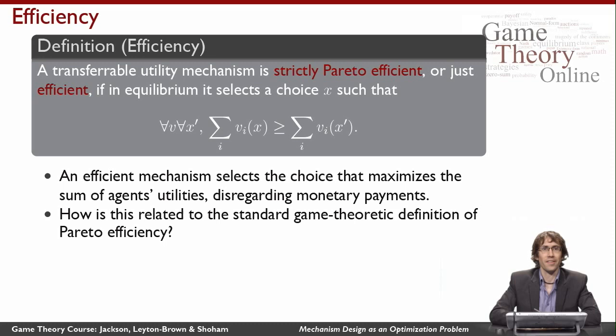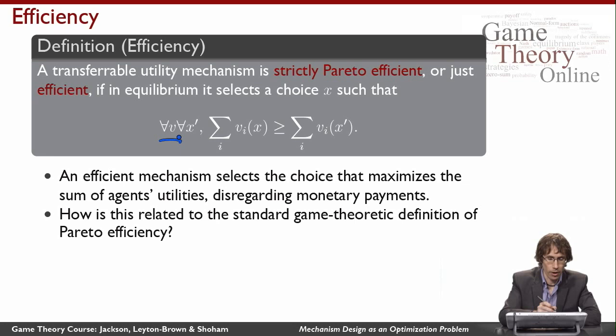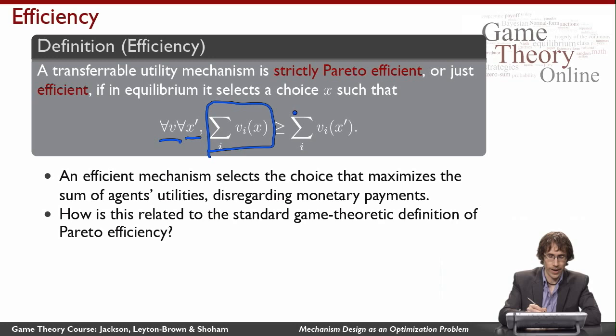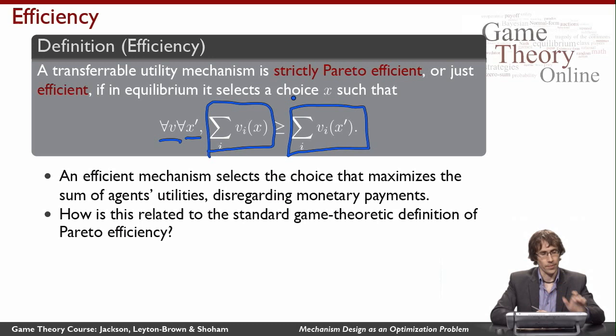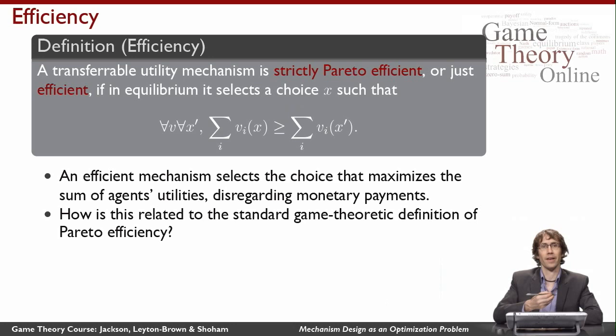A mechanism is strictly Pareto efficient, or just efficient, if in equilibrium it selects a choice X such that for all joint valuation vectors the agents might actually have, and for all other choices X prime, the sum of the agents' valuations for X is at least as big as the sum of valuations for X prime. In other words, a mechanism is efficient if it selects the choice that maximizes the sum of the agents' actual valuations — their actual utilities disregarding payments.